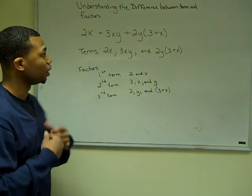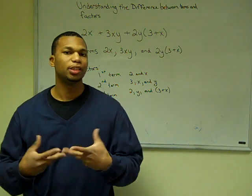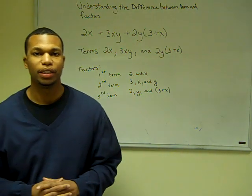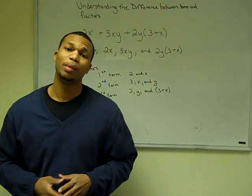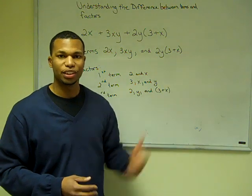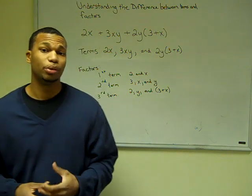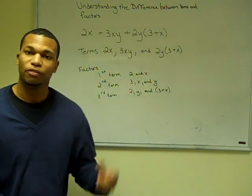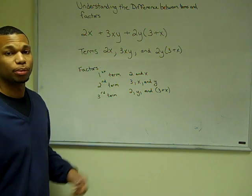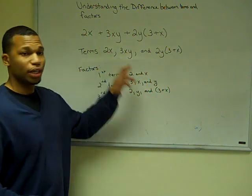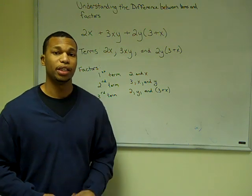In this example, we have 2x plus 3xy plus 2y times the quantity of (3 + x). Identifying the terms — terms are everything separated by addition — so our terms are 2x, 3xy, and 2y times the quantity of (3 + x). The parentheses is treated as one number, which we'll get into more in later lessons. The factors in each term are: 2 and x in term 1; 3x and y in term 2; and 2y and the quantity (3 + x) in the last term.